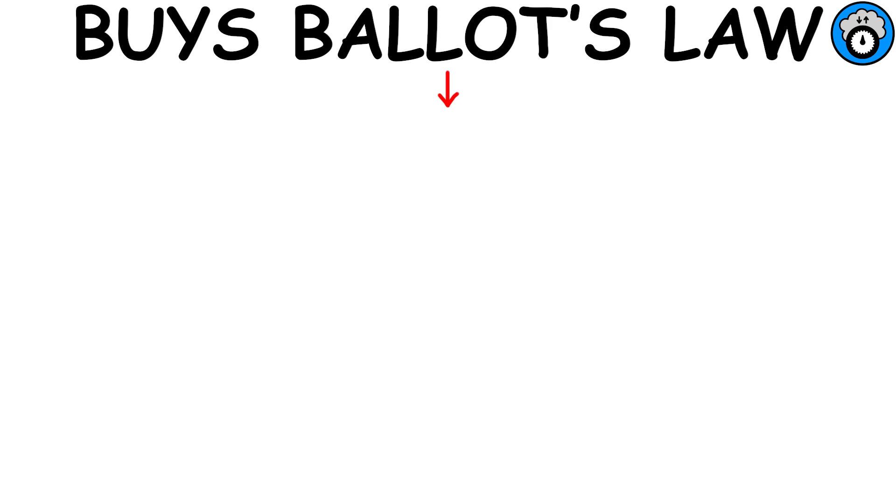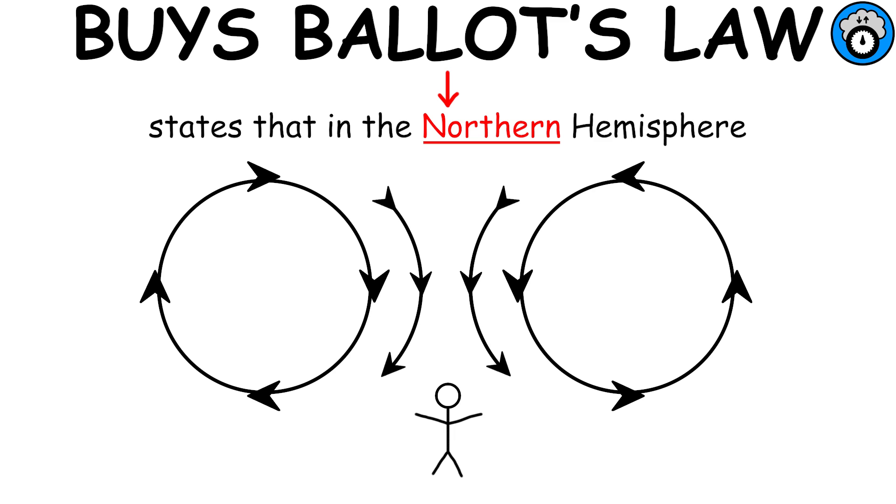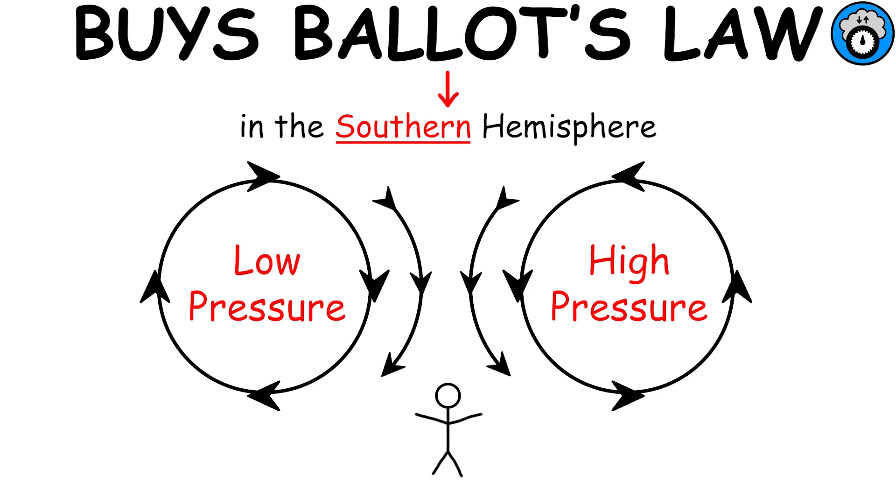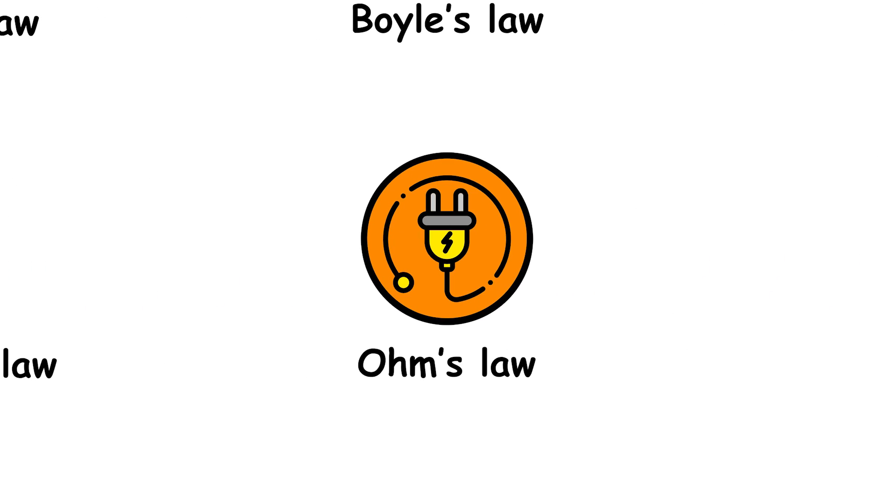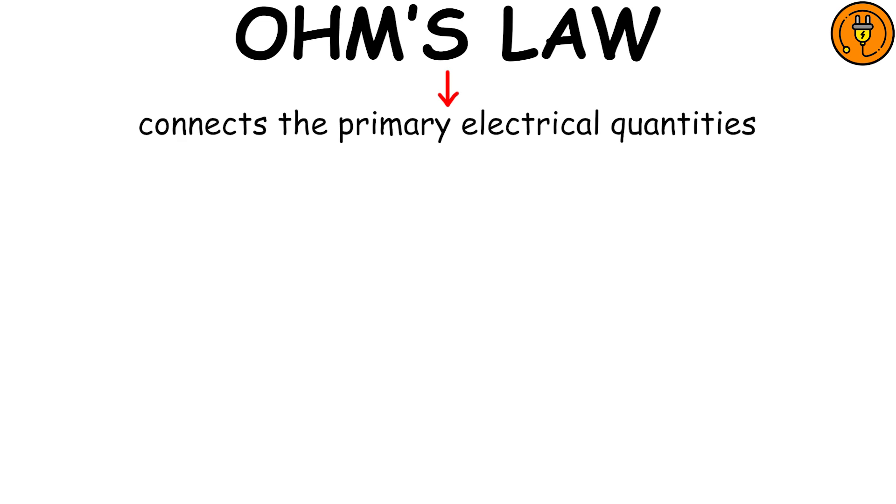Baye's Ballot's Law states that in the Northern Hemisphere, a person who stands facing away from the wind has high pressure on the right and low pressure on the left. In the Southern Hemisphere, the reverse would be true.